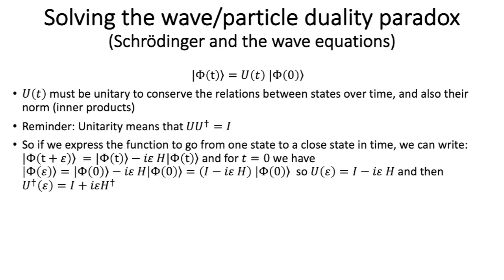So, if we express the function to go from one state to a closed state in time, we can write this: that the state at t plus epsilon time is just from the previous state, you remove something to go to the next state. Or you could also consider that you add something. And whatever H means here, U_t and phi_t could be complex. So, we can multiply them by i, and in fact, writing it this way will simplify calculations. And we'll see later why this actually must be complex and not just real. So, if we write it under this form and for t equals zero, we get that, which is equal to this here. So, U of epsilon is equal to this.